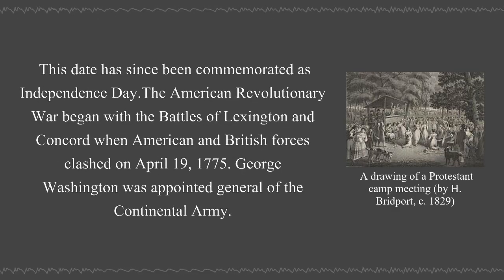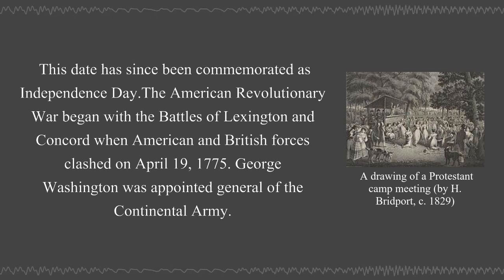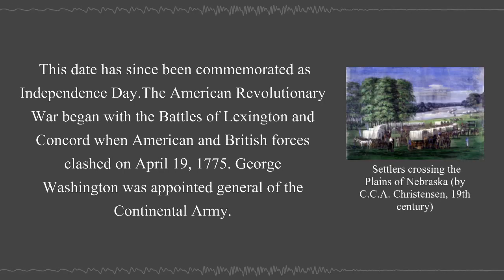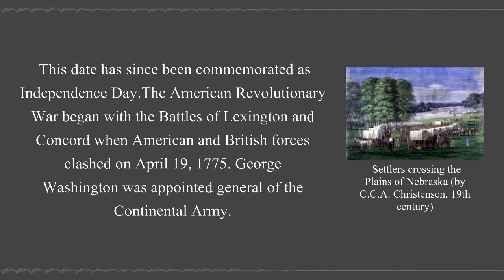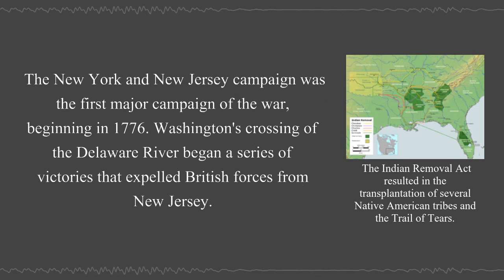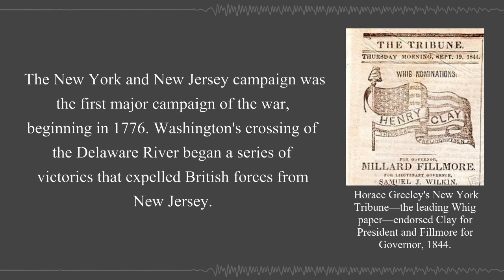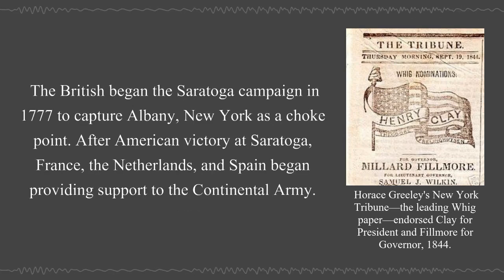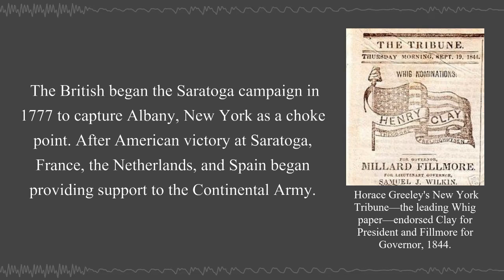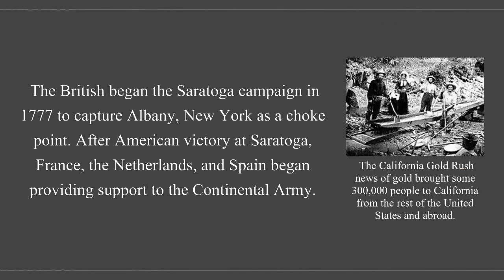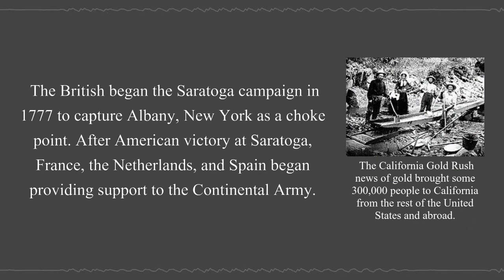The American Revolutionary War began with the battles of Lexington and Concord, when American and British forces clashed on April 19, 1775. George Washington was appointed General of the Continental Army. The New York and New Jersey Campaign was the first major campaign of the war. Beginning in 1776, Washington's crossing of the Delaware River began a series of victories that expelled British forces from New Jersey. The British began the Saratoga Campaign in 1777 to capture Albany, New York, as a choke point. After American victory at Saratoga, France, the Netherlands, and Spain began providing support to the Continental Army.